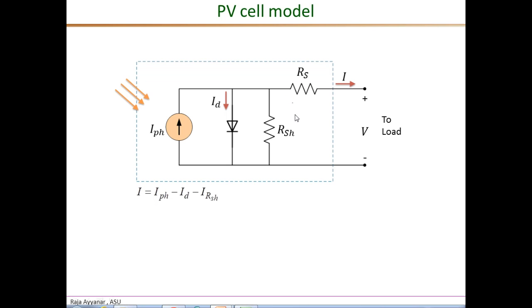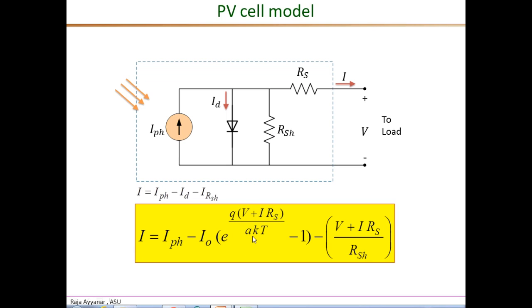The final external current I is I_photon minus the diode current minus the small current into the shunt resistance. With the diode current given by the Shockley expression, the total external current is I_photon minus the diode current minus the leakage current through R_shunt, which is the voltage (V plus I·R_S) divided by R_shunt. Here Q is the electron charge, K is the Boltzmann constant, T is the temperature in Kelvin, and A is the ideality factor. The IV characteristic is simply the plot of this equation, sweeping external voltage V from 0 to a maximum value.